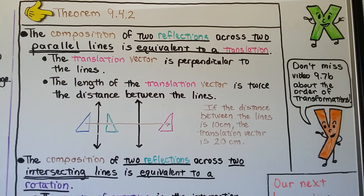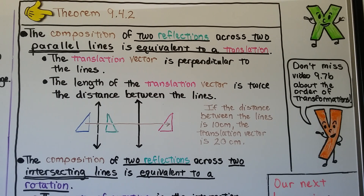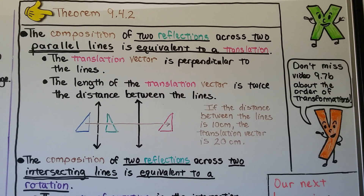If you're not watching every video in the playlist, make sure you don't miss 9.7b, because we're going to talk about the order of transformations and whether they matter. For example, if you did a translation and then a rotation, would it matter if you did the rotation first? Would the shape end up in the same place or a different place? We'll cover that in 9.7b.